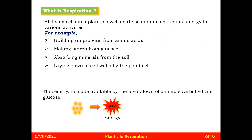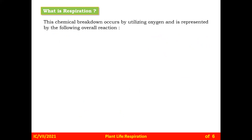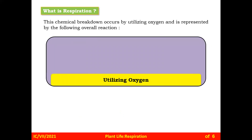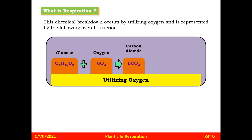Glucose provides energy stored in the form of ATP. This chemical breakdown occurs by utilizing oxygen and is represented by the overall reaction: glucose (C₆H₁₂O₆) plus six molecules of oxygen gives six molecules of carbon dioxide and six molecules of water. This is the equation of respiration, and 38 ATP molecules of energy are released in aerobic respiration.